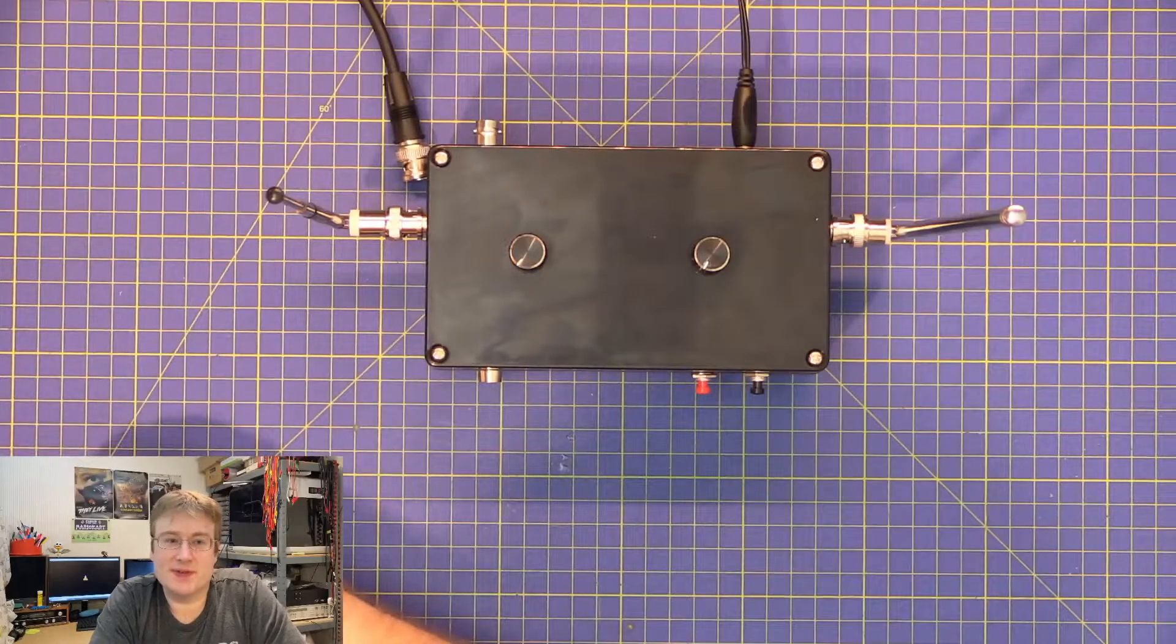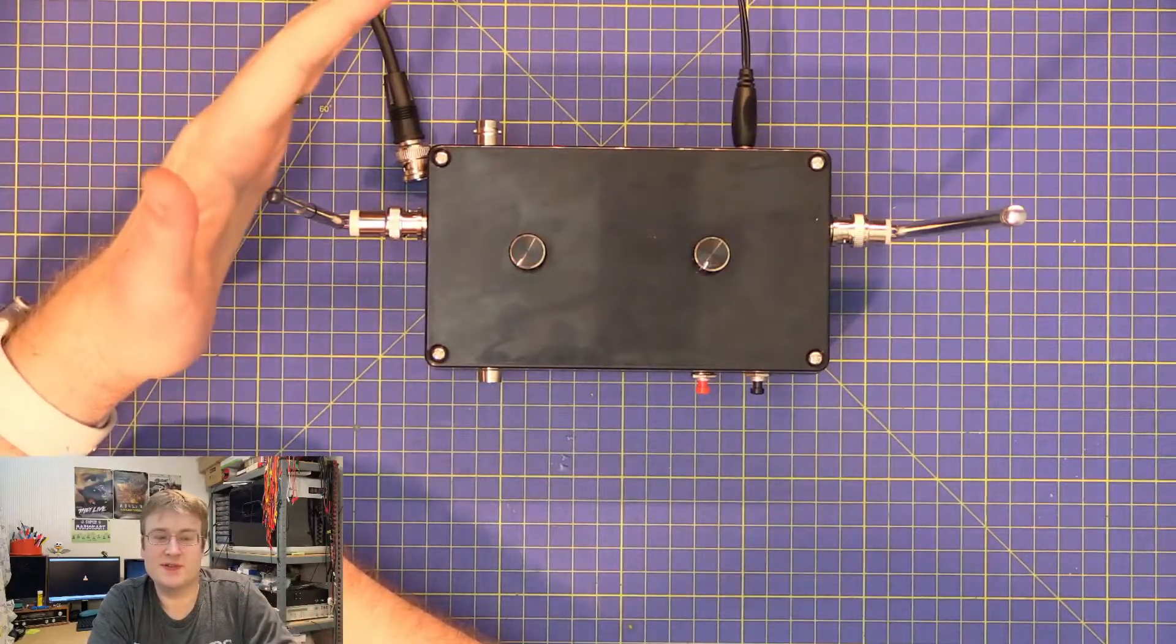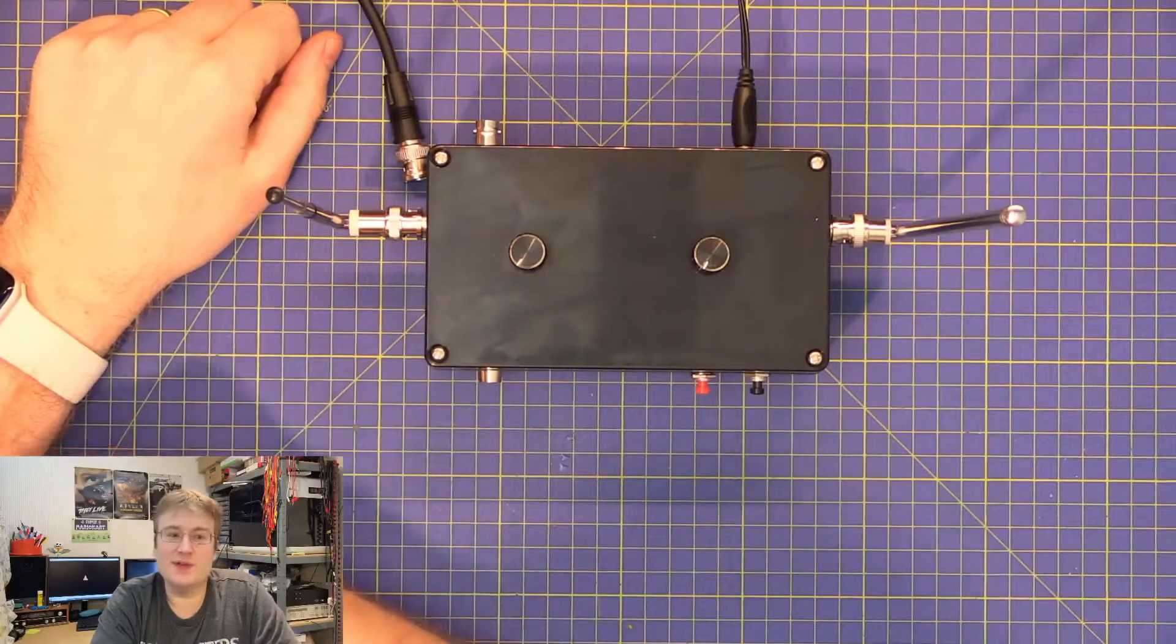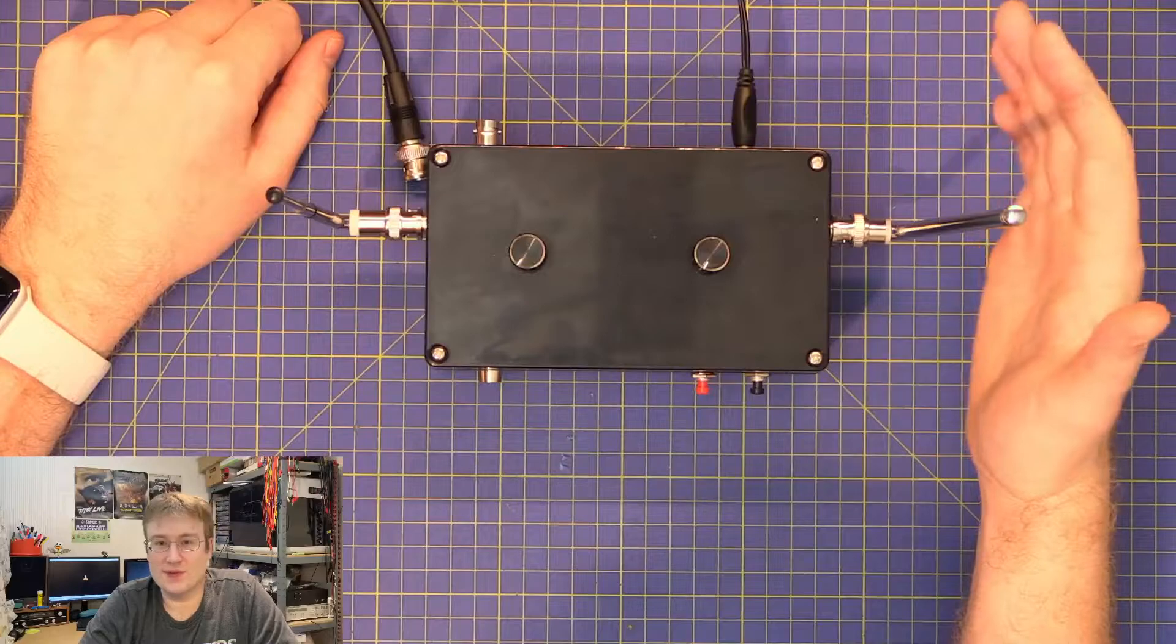Now the Theremin is a musical instrument where the user can control the pitch of the instrument by the proximity of one of their hands with respect to one antenna, and they can control the volume of the instrument by the proximity of their hand to another antenna.